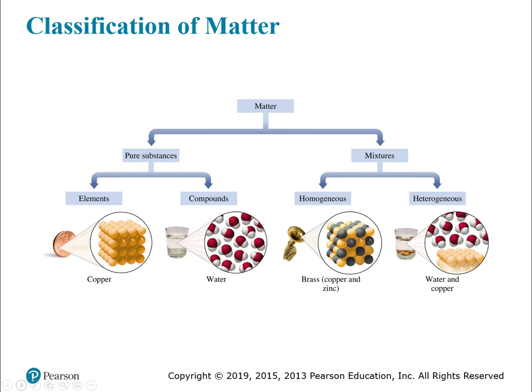That's the classification of matter. I would suggest you have this chart in your notebook. When you're studying, go through and make sure you know what definitions go with which word, and that you have examples of each on lock. There are examples here for elements, compounds, homogeneous mixtures, and heterogeneous mixtures. If those examples don't work for you, add your own — so that when you're doing homework and exams, you can pull from those examples.